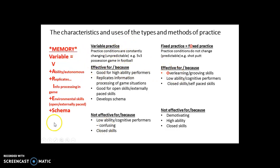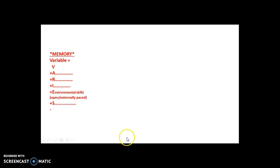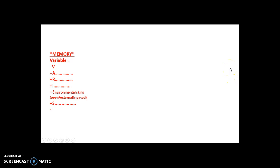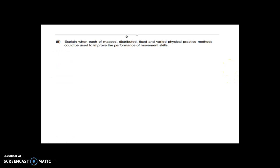So if you can remember VARIES and hook the A for high ability against fixed practice being good for low ability, and variable being good for open skills while fixed practice is good for closed skills, you can answer any comparison question on these practice types. To make sure you can get at least two points for a 'compare the use of' question - that's how you hook it. If the question was to compare the use of variable and fixed practice when learning skills, pause now and have a go at the exam question.